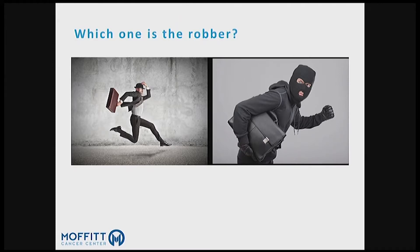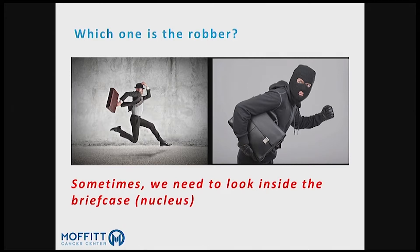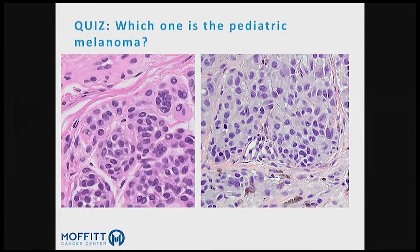This is our lay explanation for that: which one of these is the bank robber, A or B? You use the clues — he looks a little shifty and kind of covered up — but you really don't know which one is the bank robber. So you open up the briefcase and see whether it's money or just papers. This could be winter, this could be New York fashion. You have to look inside the briefcase — or in our case, you have to look inside the nucleus.